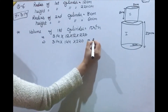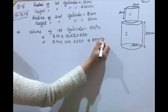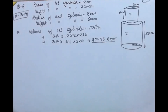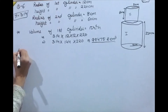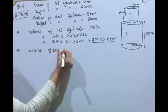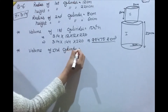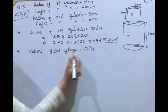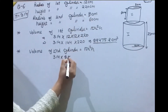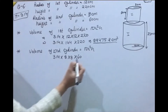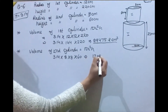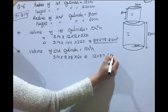3.14 × 144 × 220 = 99,475.2 cm³. That is the volume of the first cylinder. Now we find the volume of the second cylinder: π r² h = 3.14 × 8 × 8 × 60 = 12,057.6 cm³.